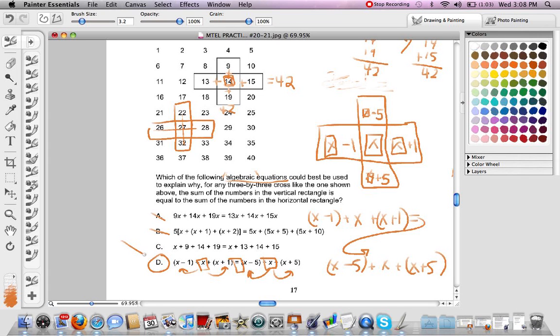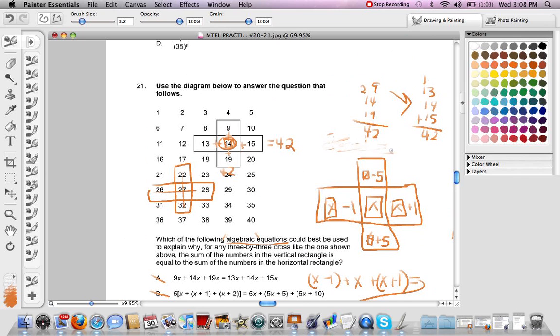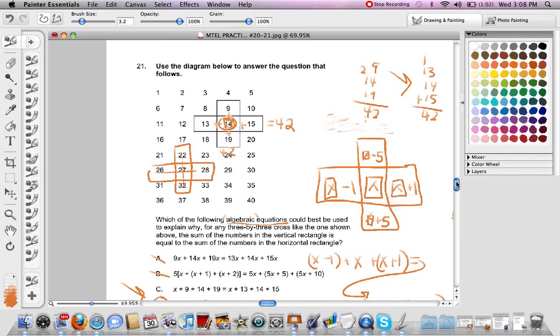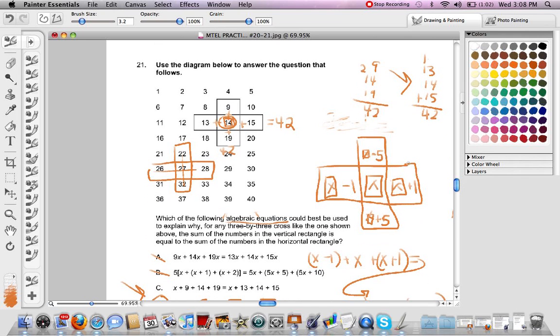So this is the approach to use to get the answer for number 21. I call it, if I had to give this a method, in forming algebraic equations, I would say look for the common number. Turn that into an x. And write all the numbers that are connected with it in terms of x. This will help you get that algebraic equation.